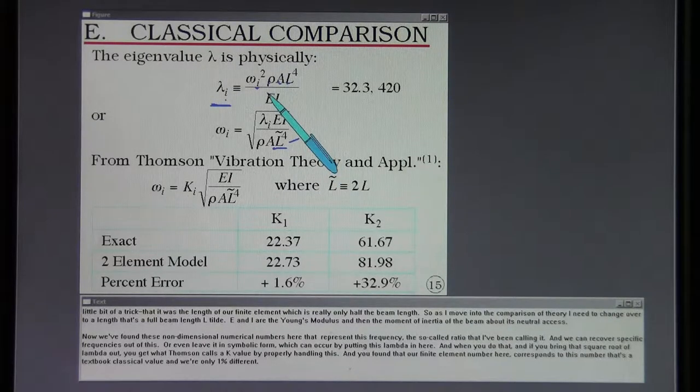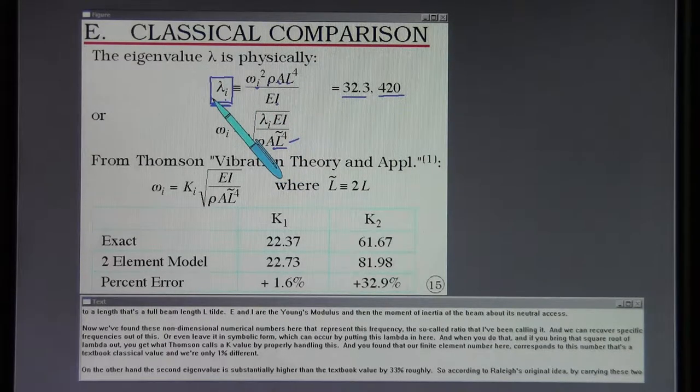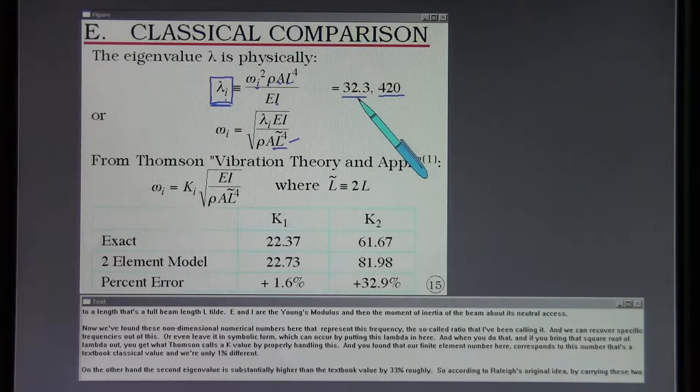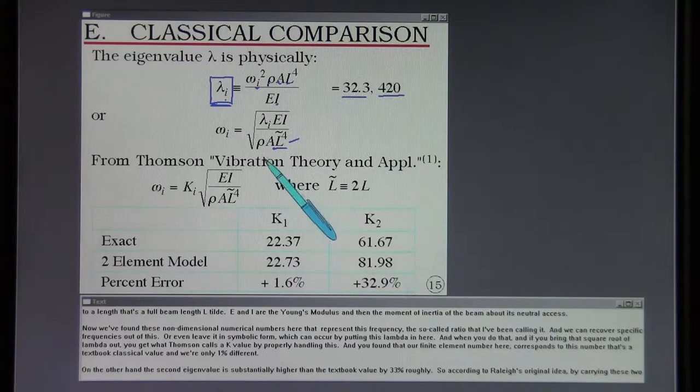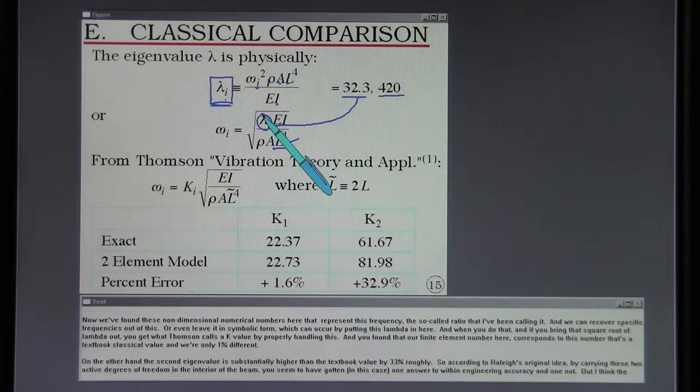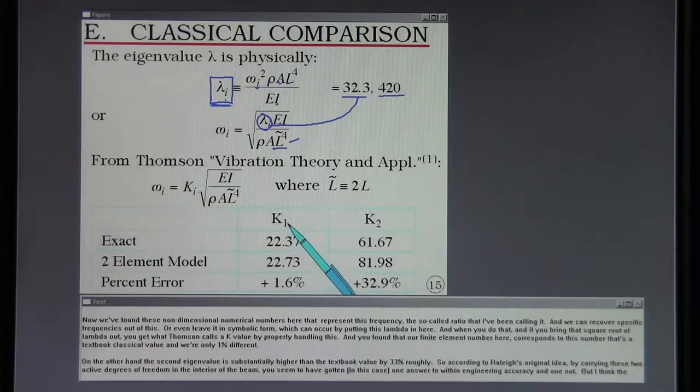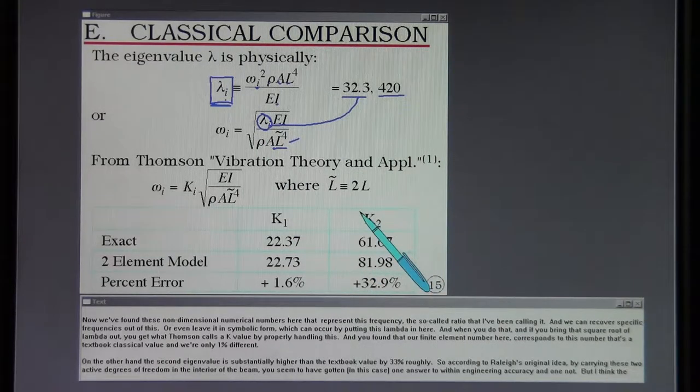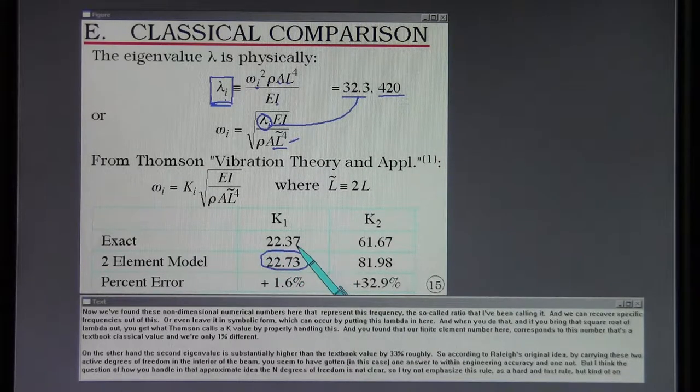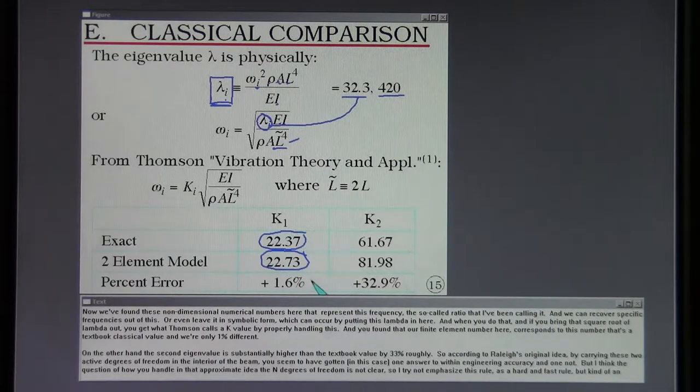We found these non-dimensional numerical numbers here that represent this so-called frequency ratio. We can recover specific frequencies out of this or even leave it in symbolic form by putting this lambda in here. When you do that and if you bring that square root of lambda out you get what Thompson calls a K value. You found that our finite element number corresponds to this textbook classical value and we're only 1% different.